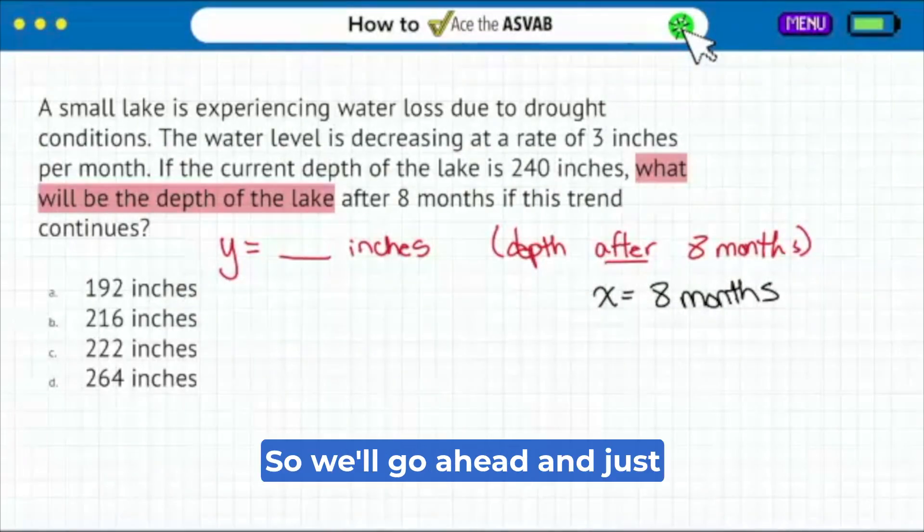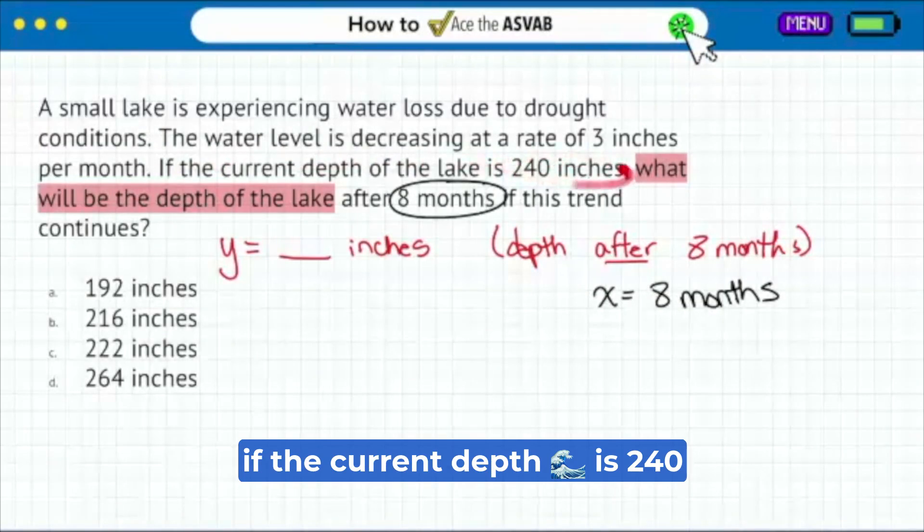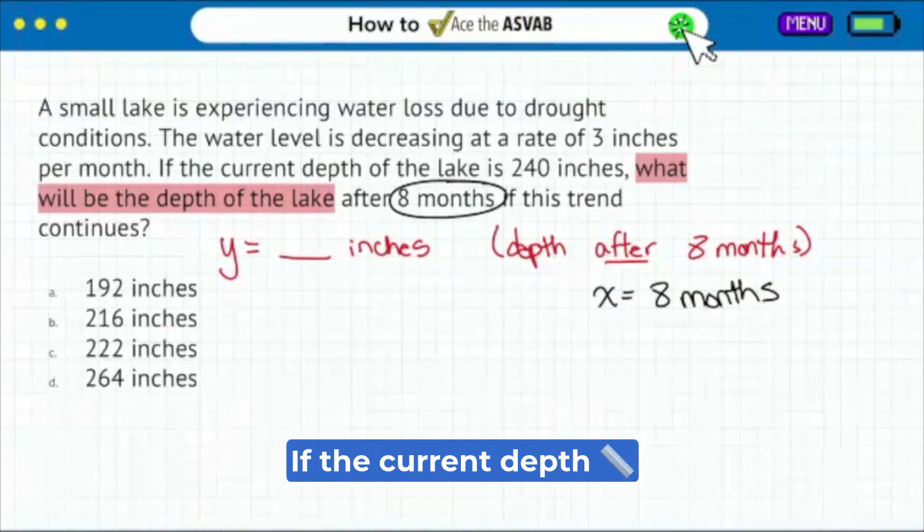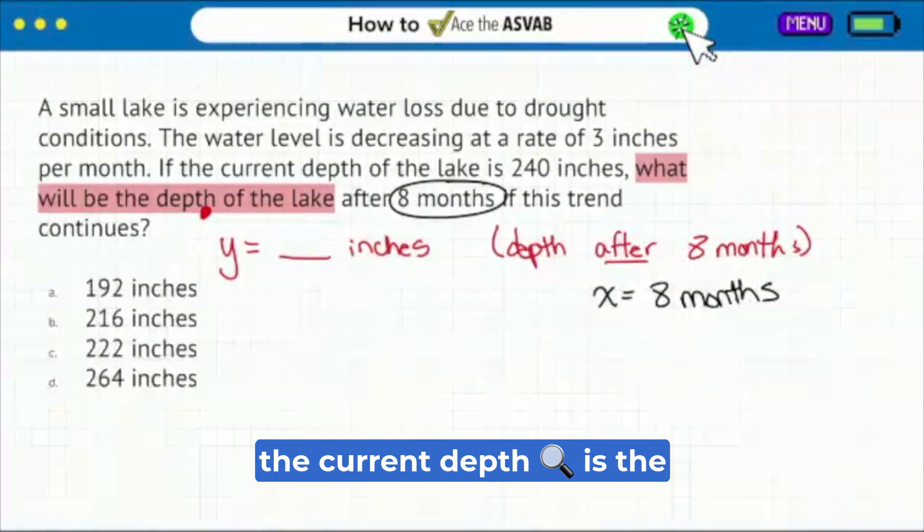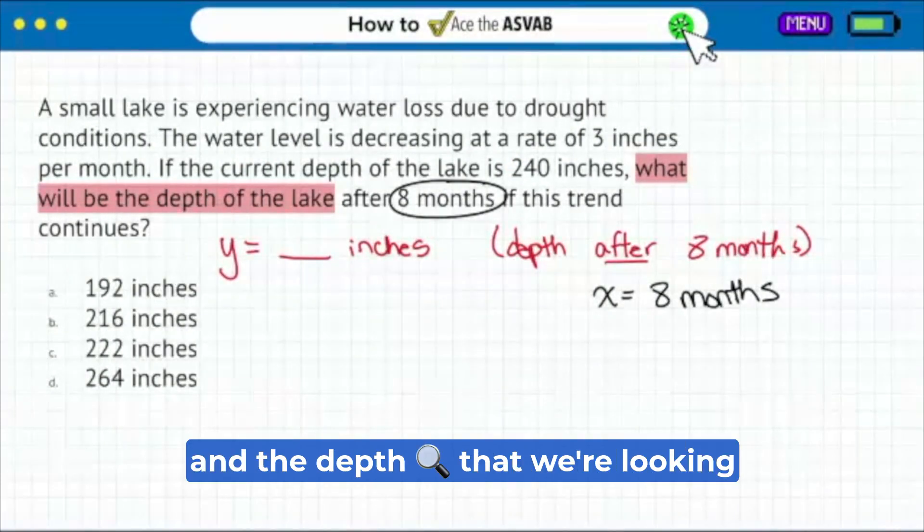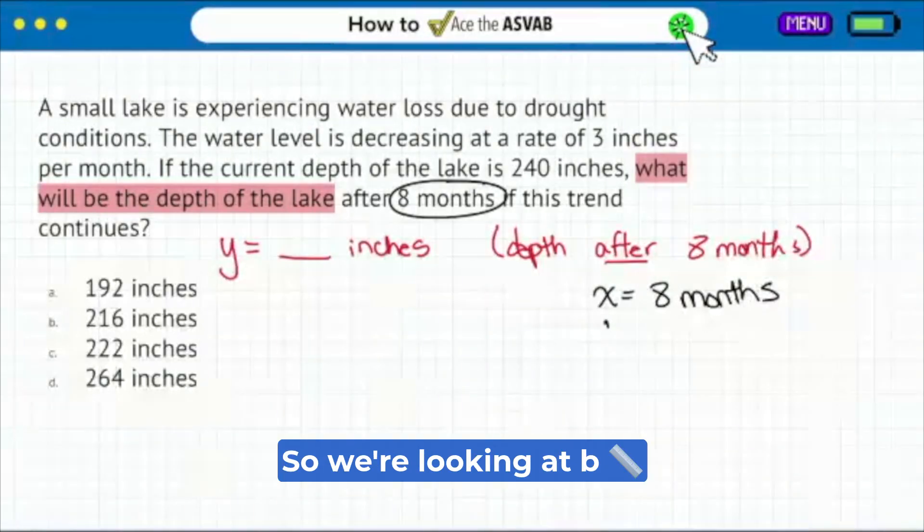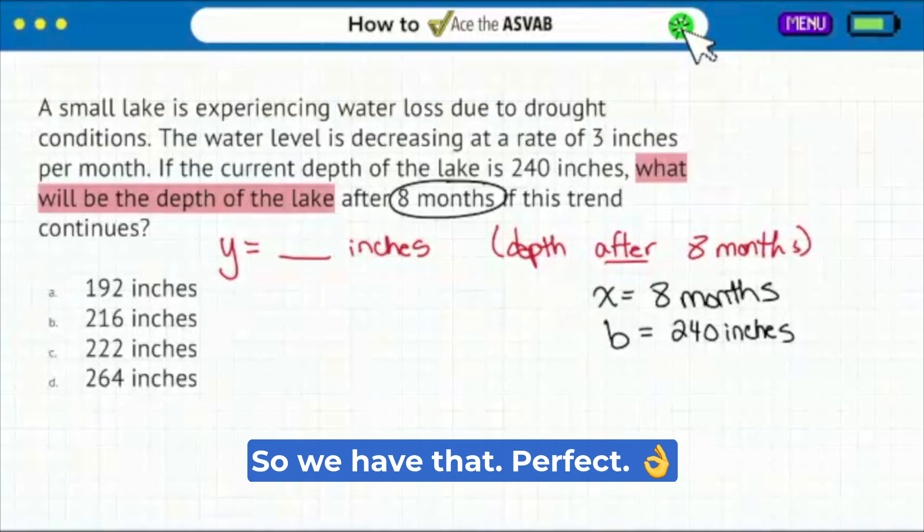We'll go ahead and circle that. And then it says if the current depth is 240 inches, what does that mean? If we're trying to look for the depth later, the current depth is the beginning amount, the current depth is what we have in the beginning. And the depth that we're looking for is the result. So we're looking at b equals 240 inches. That's what we begin with. Perfect.